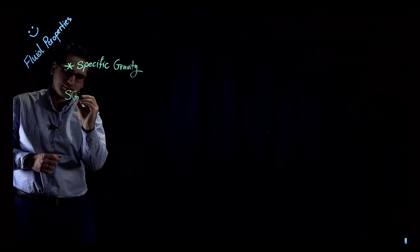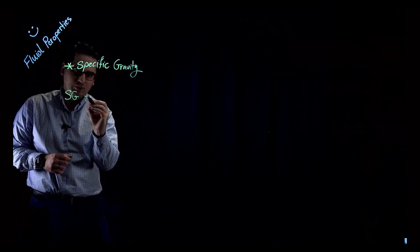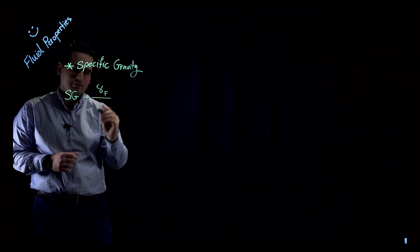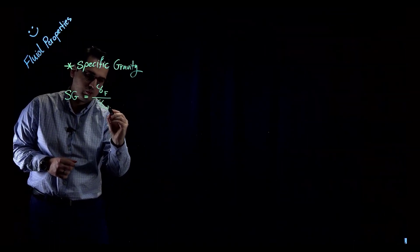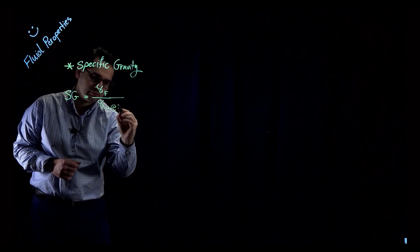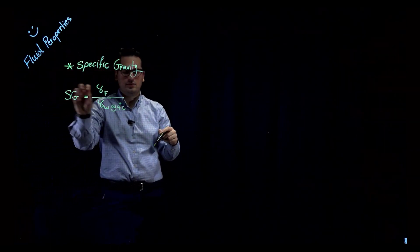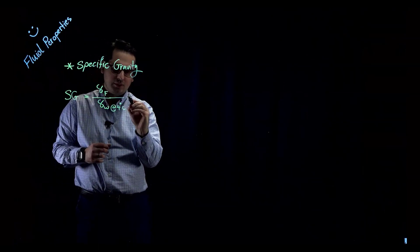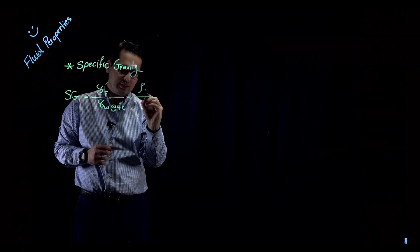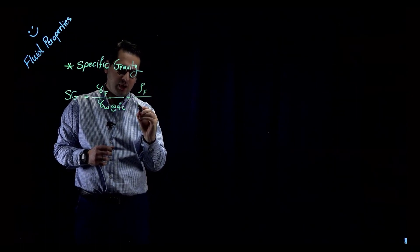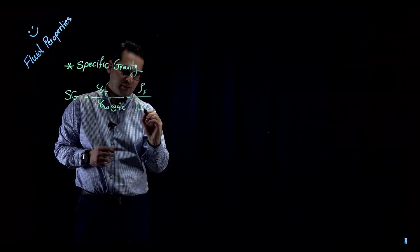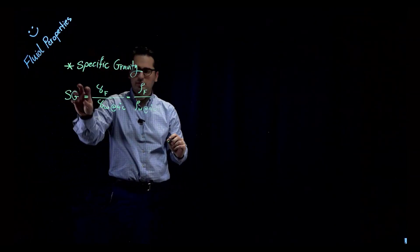The last fluid property I want to define is specific gravity, abbreviated SG. Specific gravity of any fluid is its specific weight divided by the specific weight of water at 4 degrees Celsius. Since gamma is related to density, I can also write SG as the density of any fluid divided by the density of water at 4 degrees Celsius.